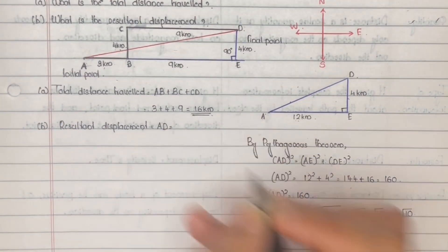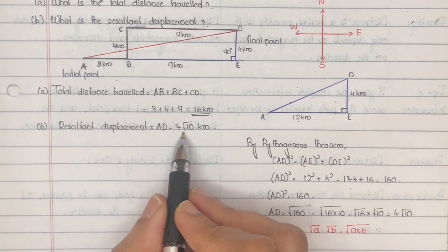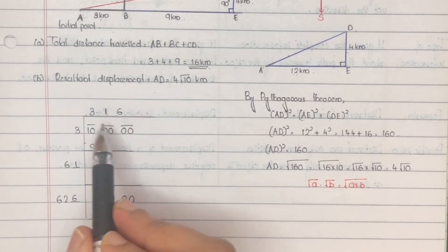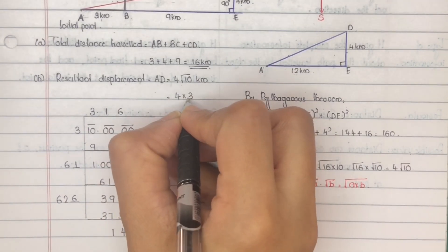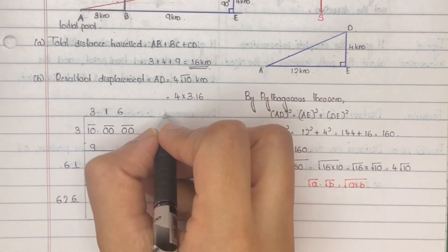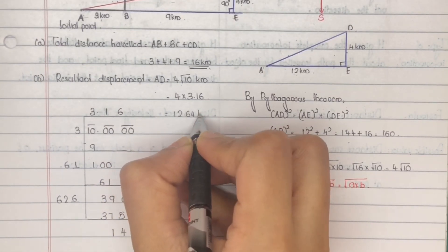So AD is equal to 4√10 kilometers. Now, √10 is 3.16 et cetera. So this is equal to 4 into 3.16 equal to 12.64 kilometers.